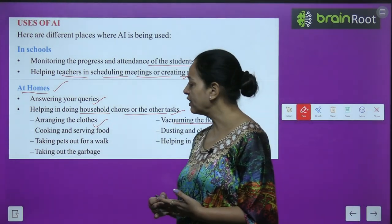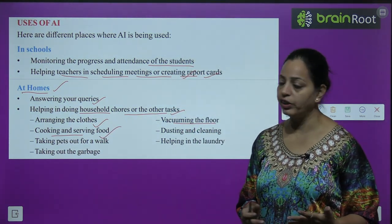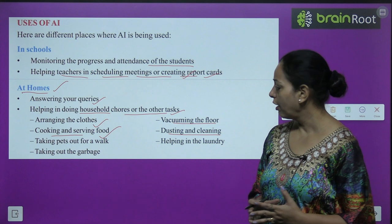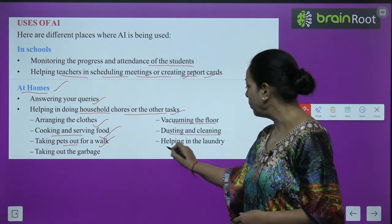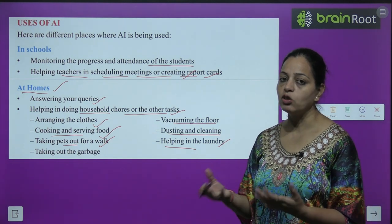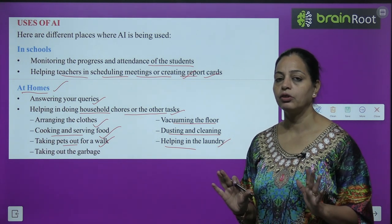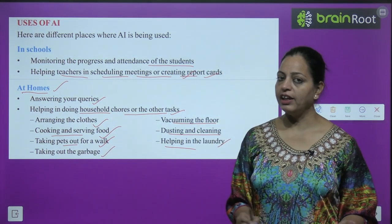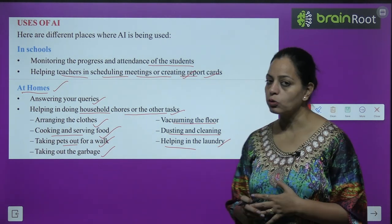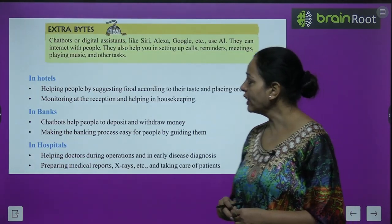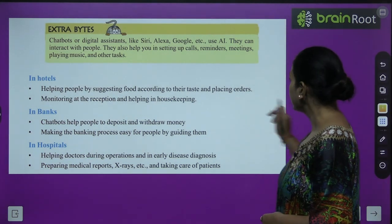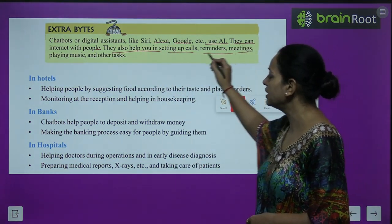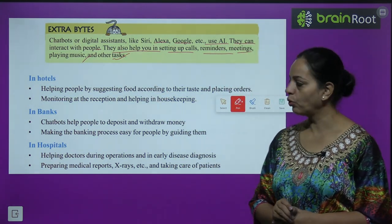At home, AI helps with cooking and serving food using microwave ovens, dusting and cleaning appliances, taking pets out for a walk, helping with laundry using fully automatic machines, and taking out the garbage. Chatbots and digital assistants like Siri, Alexa, and Google use AI — they can interact with people, help in setting up calls, reminders, meetings, playing music, and other tasks.